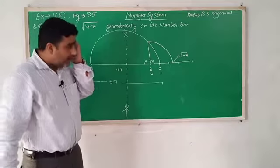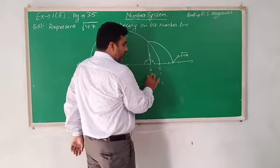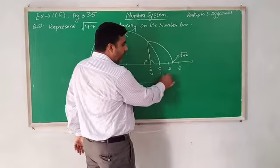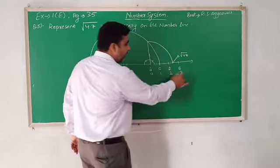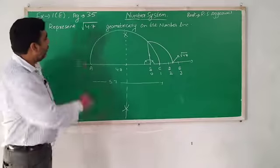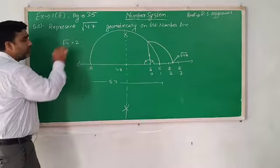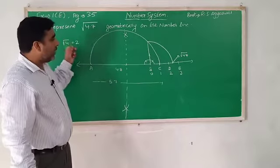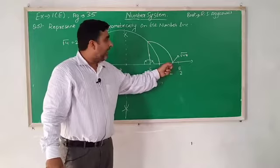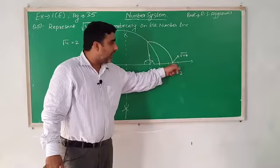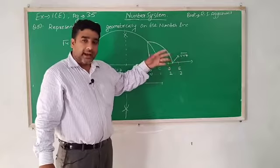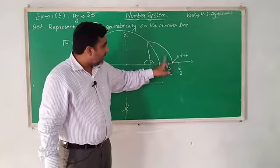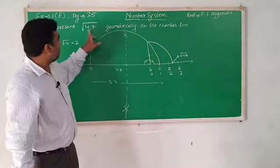Now see the measurement. I had told you to mark 1 cm intervals — B is 0, C is 1, D is 2, E is 3. The value of root 4 is 2. If I were making root 4, it would fall directly at D. But root 4.7 falls a bit ahead of D, between 2 and 3 on the number line. Is that clear?